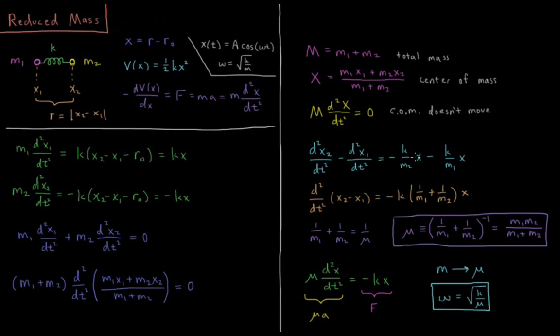So we have minus k/m2 times x, minus k/m1 times x. This is equal to the second derivative with respect to time of x2 minus x1, which equals, on the other side, if I factor out k, minus k times (1/m1 + 1/m2) times x.